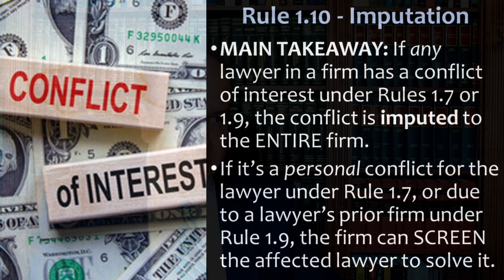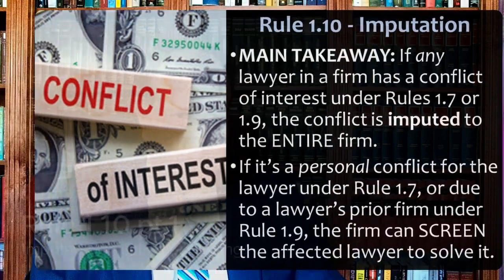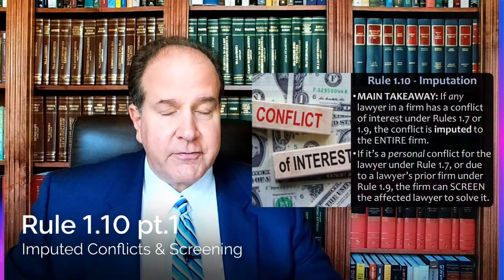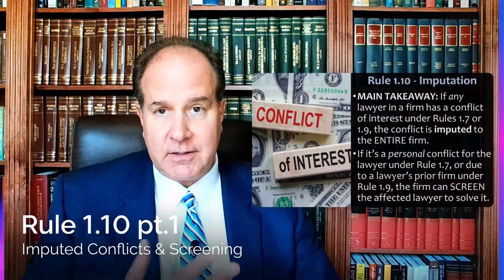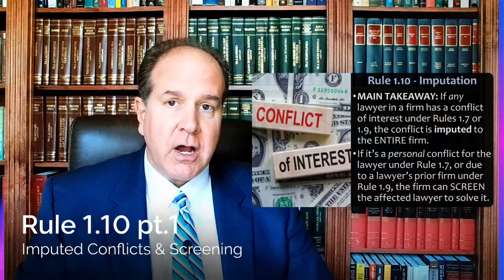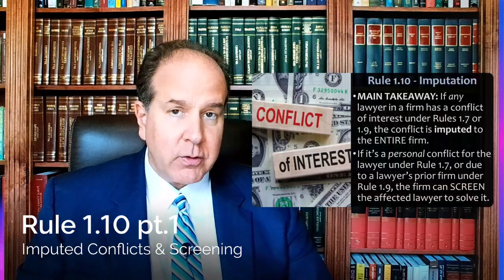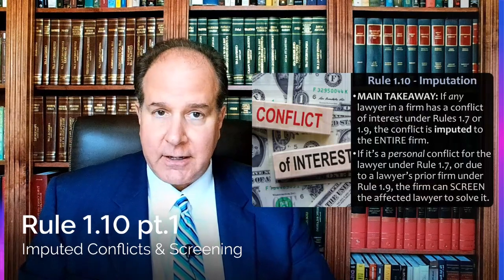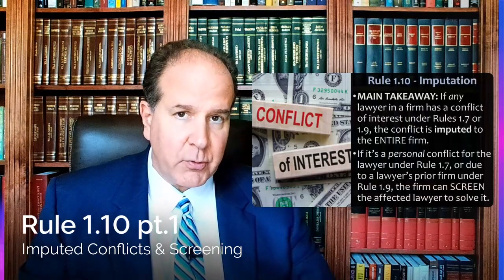If it's a personal conflict of interest for the lawyer under 1.7, or due to a lawyer's prior firm under 1.9 — especially 1.9(b) — the firm can screen the affected lawyer to solve it. We also had conflict Rule 1.8, which covered a lot of personal conflicts of interest, and that rule has its own imputation and screening rule at the end of 1.8.